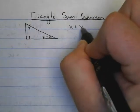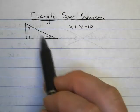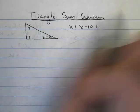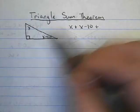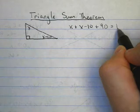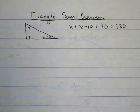So let's add our three angles together. I have x plus x minus 10 plus my third angle, since we have that right angle symbol, will be 90. And now I add these together and I set it equal to 180, and I'm able to solve.